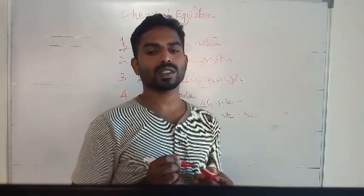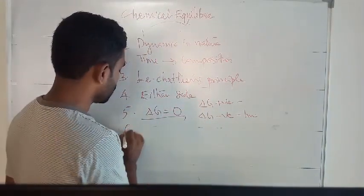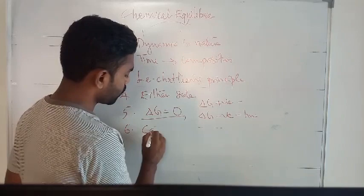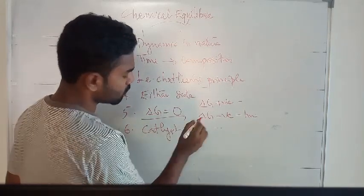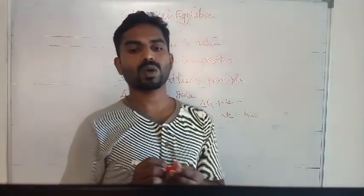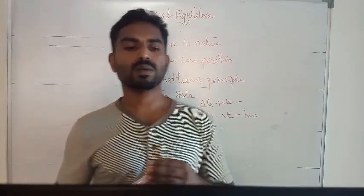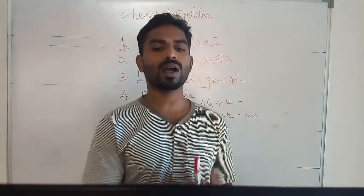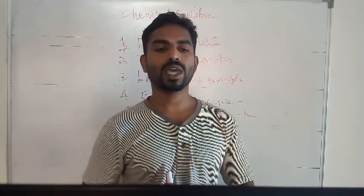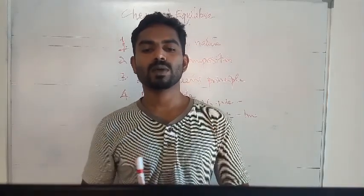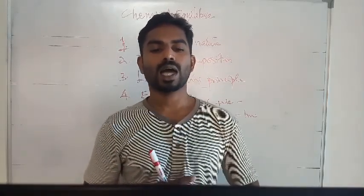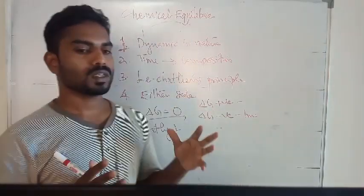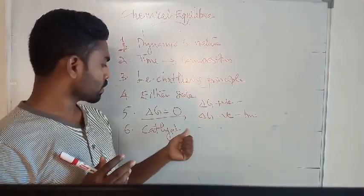The sixth characteristic: its position is not affected by the presence of a catalyst. There is no effect of a catalyst on chemical equilibrium. However, a catalyst increases the rate of both forward and backward reactions to the same extent, thereby merely speeding up the attainment of equilibrium, but does not change the equilibrium position.